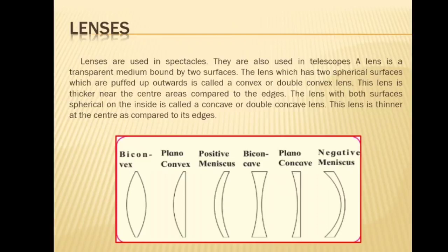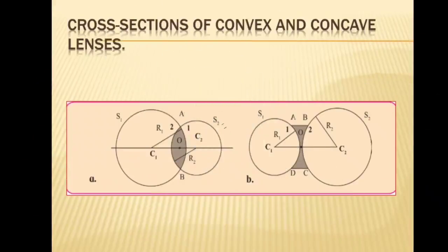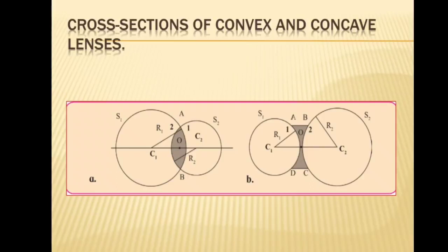Both the surfaces of most lenses are parts of a sphere. Look at the diagram — both diagrams represent two lenses: the first is a convex lens and the second is a concave lens, both being parts of two spheres. We will learn certain terms related to them. Center of curvature, represented by C — in the first diagram it is C1 and C2, and in the second diagram also C1 and C2. The centers of the spheres whose parts form the surfaces of the lens are called the centers of curvature.